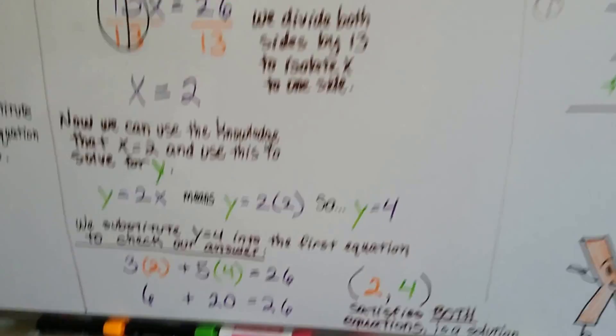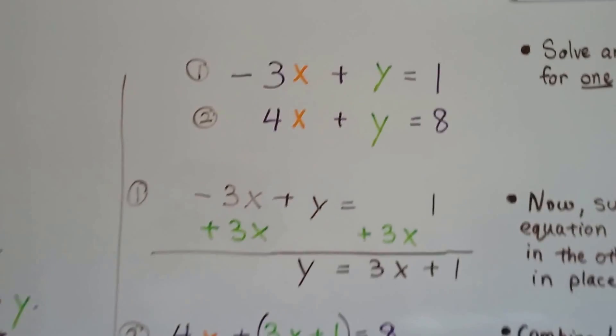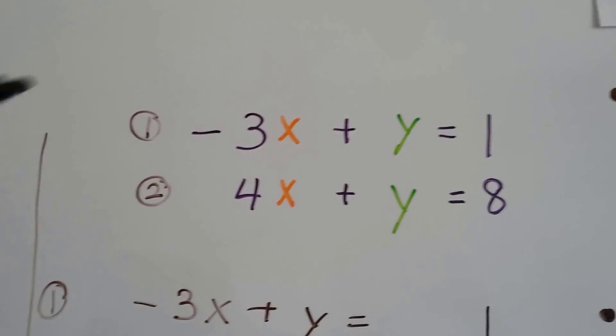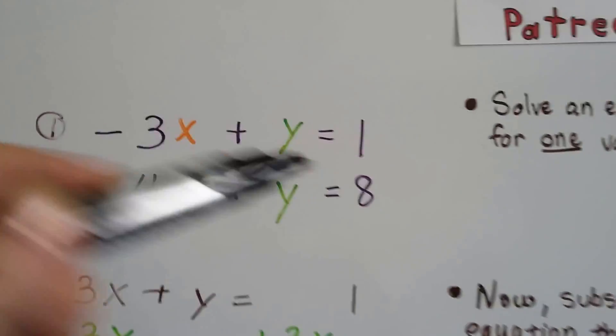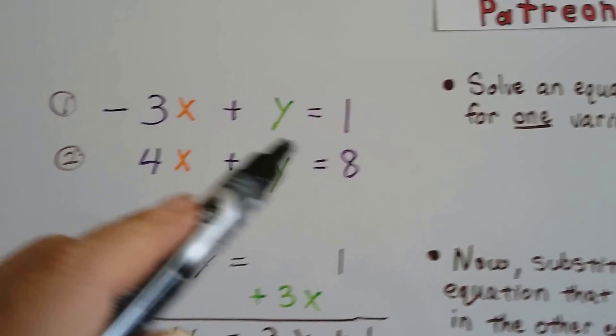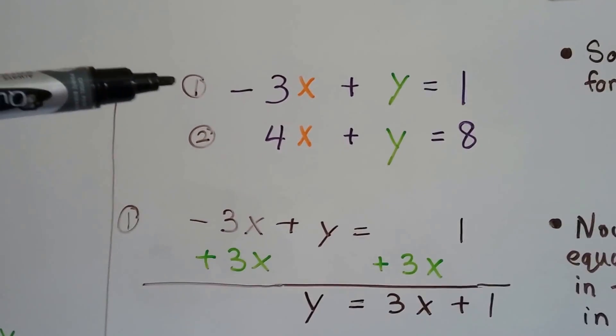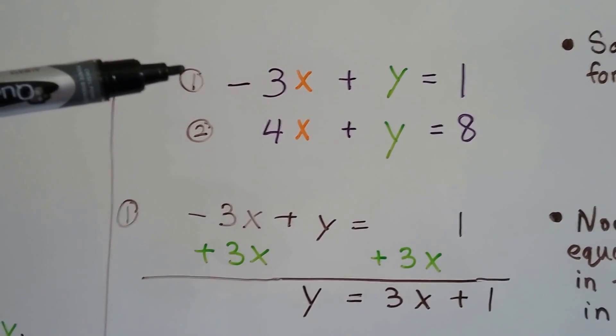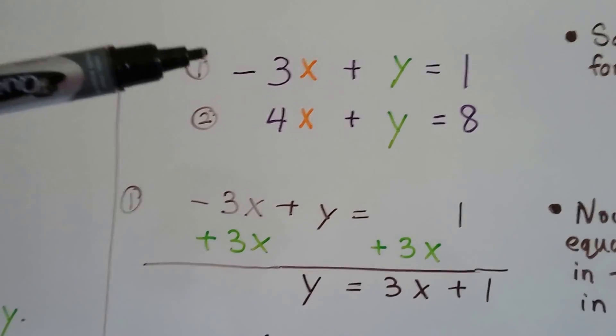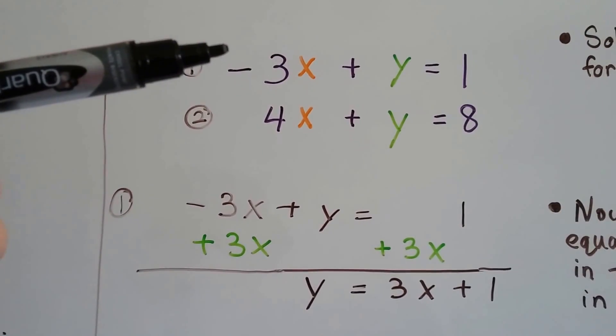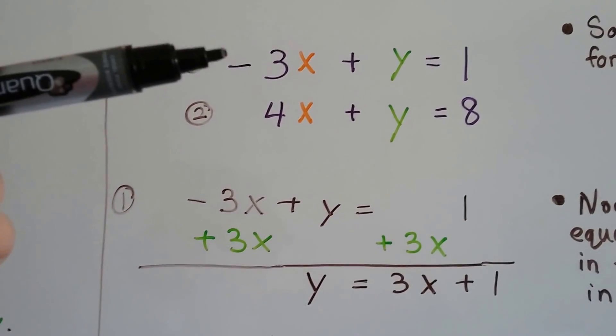Let's try it again with another example. So here's our system of equations. Here's our two equations. Here's the first one, and here's the second one. We're going to solve an equation for one variable. So let's work with this first one right here. I'm sorry, my dog is barking. They're checking the gas meter out back. So here's our first equation. We've got negative 3x plus y equals 1.